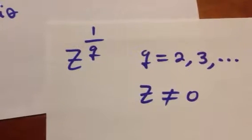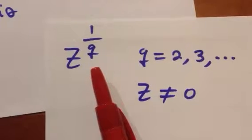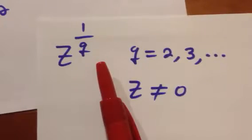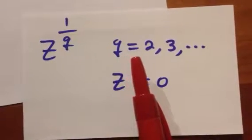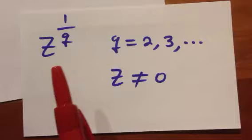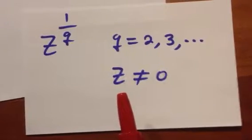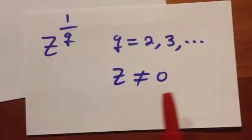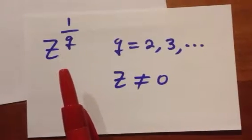This is a power function z to 1 over Q, where Q is a constant. In this case, it is a positive integer greater than 1. This function is defined for every complex number except 0, and it is a multi-valued function.